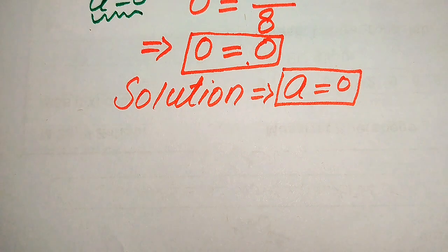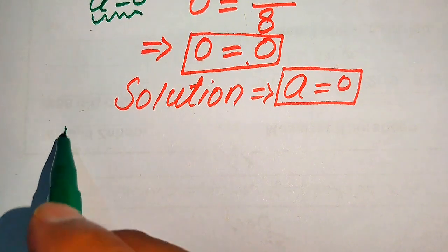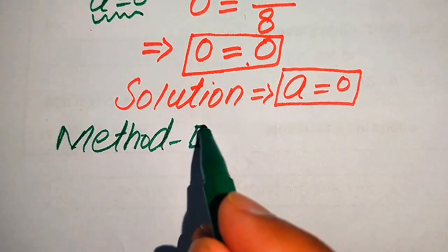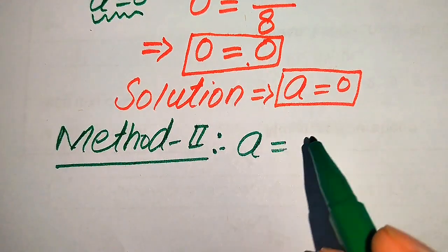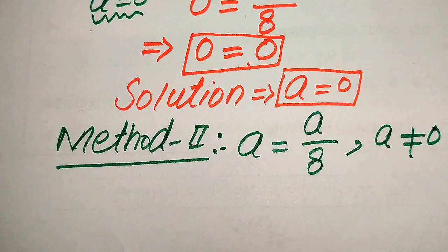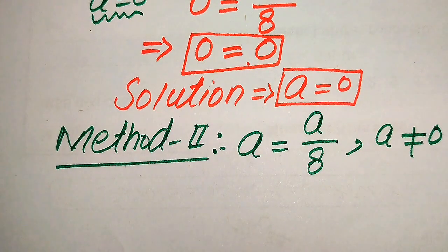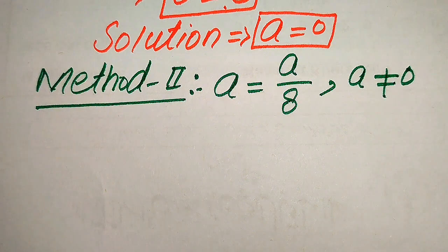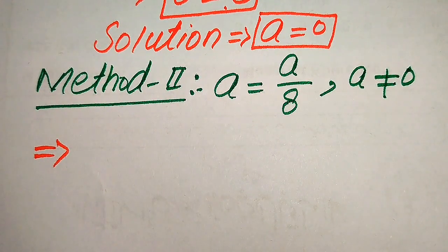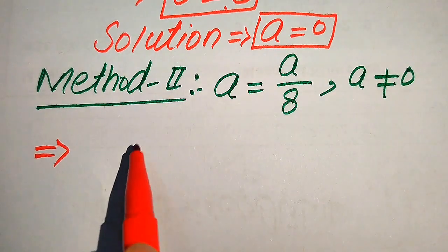Now we solve this problem using the second method. We copy down the given equation: a is equals to a divided by 8. In the second method, we consider a is not equals to 0. We again cross multiply the terms, or in other words, we use the LCM technique. We move a over 8 to the left hand side.